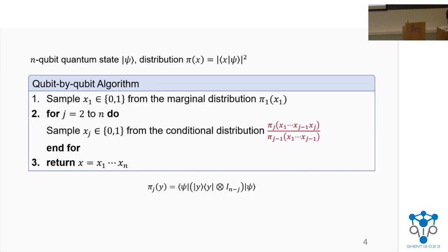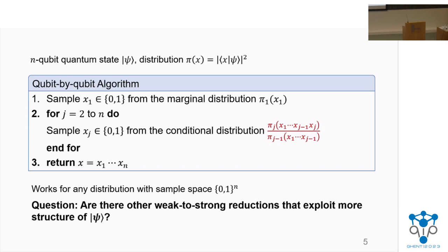What's an example of a weak-to-strong reduction? Perhaps the most general and well-known is the qubit-by-qubit algorithm. It applies the chain rule of conditional probability to sample the j-th bit conditioned on the outcomes for all previous bits. It's a very simple algorithm with a three-line pseudocode that involves computing the marginal π_j. Whether the whole sampling algorithm is efficient depends on whether you can compute all the marginals efficiently, but this is always an efficient reduction from sampling to computing such marginals.